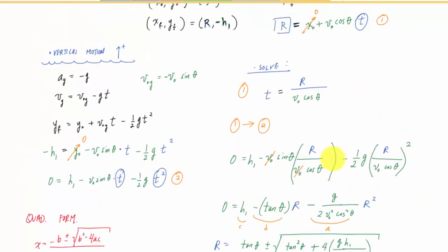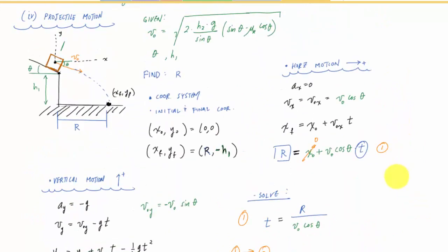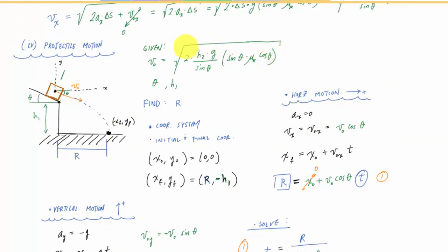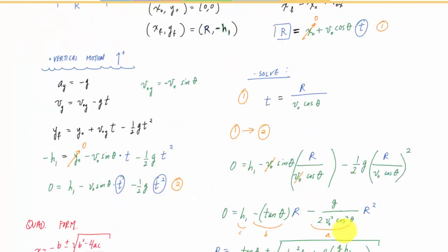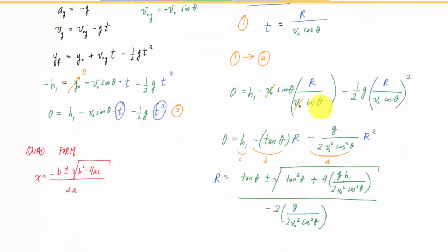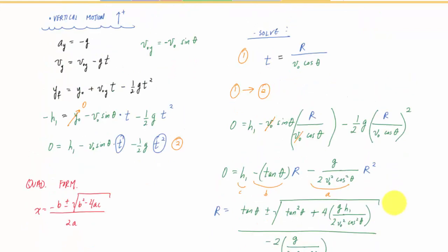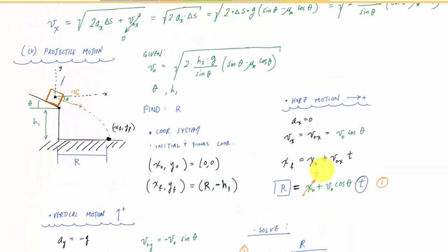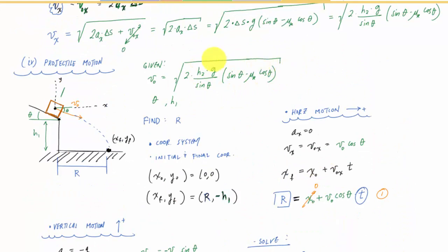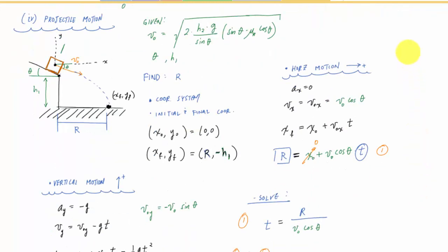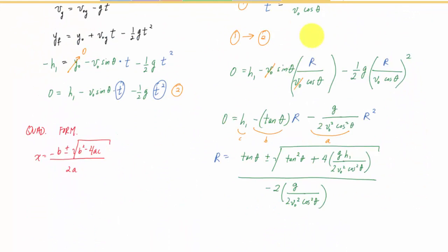You could substitute that V0 expression all the way back in here for V0 — V0 squared is the expression we found earlier — and then you can have everything all in terms of just the variables that were given at the beginning of the problem. Hopefully that was fun and somewhat interesting and not too torturous.